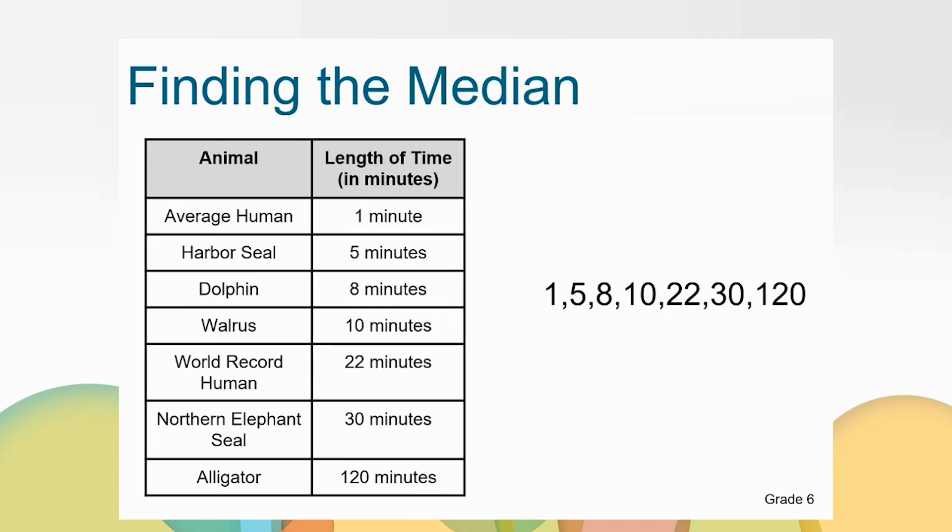To find the median, we can order the data points from least to greatest. I want to find the value in the middle. I can see that 10 is the middle because it has three data points on each side. So the median for this set of data is 10 minutes.